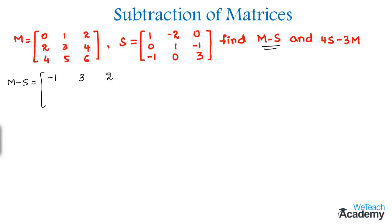And coming to the next row here by subtracting we get the elements as 2, 2 and 5 and in the next row we get 5, 5 and 6 minus 3 which is 3. So in this way we subtract matrix S from M.